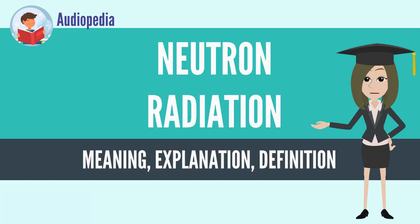Free neutrons are unstable, decaying into a proton, an electron, plus an anti-electron neutrino with a mean lifetime of 887 seconds — about 40 minutes, 47 seconds.